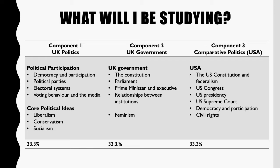In Year 13, we look at the United States as a comparative politics element — always comparing the USA back to the UK. We study the constitution, Congress compared to Parliament, the presidency, the Supreme Court, democracy and participation, elections, and civil rights and civil liberties, including things like the Black Lives Matter movement. It's a very modern, up-to-date course.